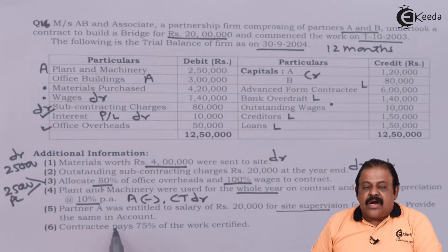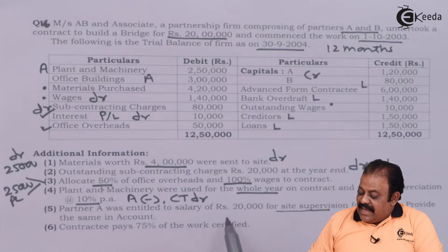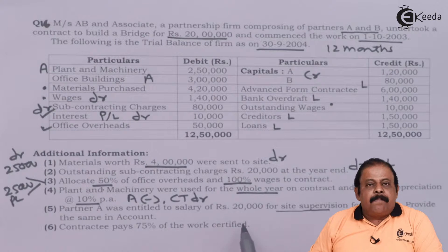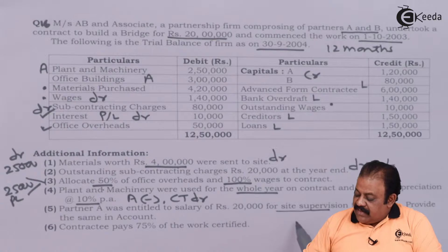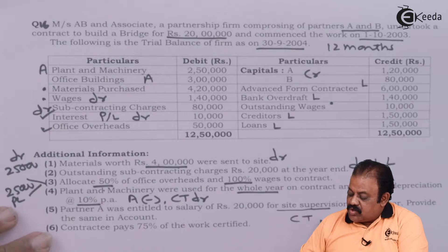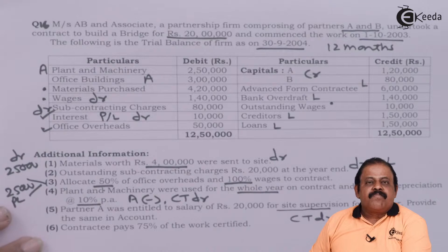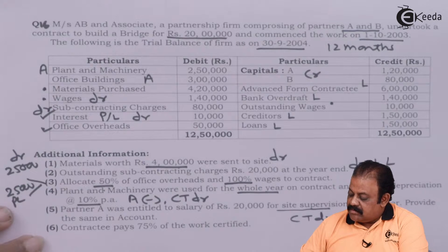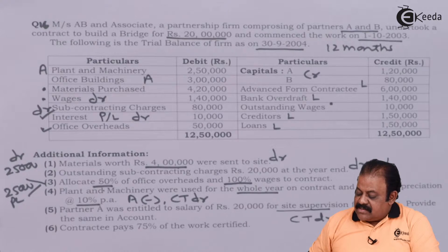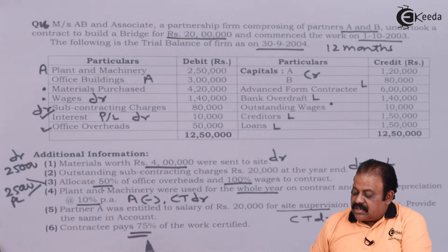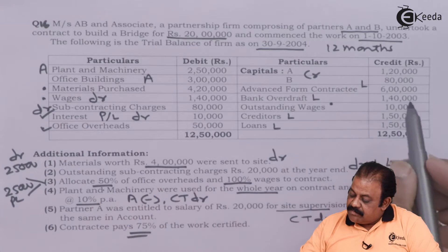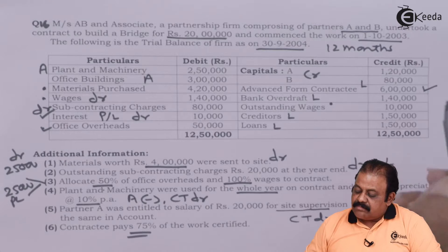Partner A is entitled to a salary of rupees 20,000 for site supervision for the year. This salary is not monthly — it is for the whole year — and it is not yet paid to the partner. One effect: contract account is debited; we are required to show this as an expense. The second effect: since it is not paid, it will be credited to the capital account of the partner.